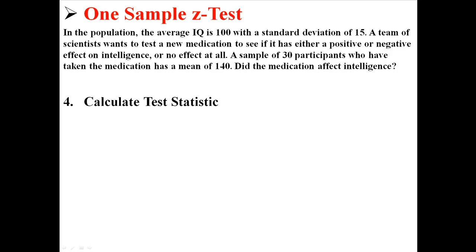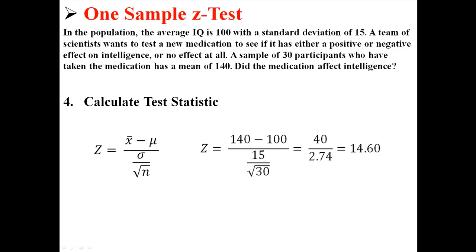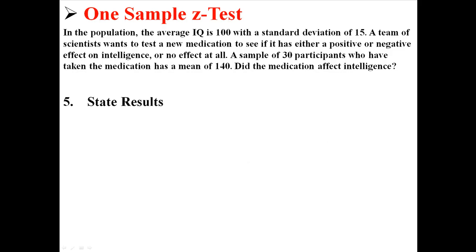Step four is to calculate the test statistic — basically, we're going to calculate z. We use the z-score equation, which is the same as before except now we include n to account for our sample size. The x-bar, our sample mean, is 140; the population mean is 100; the population standard deviation is 15; and the sample size is 30. When I put all those values in and solve for z, I end up with z equals 14.60.